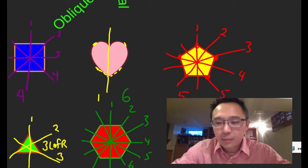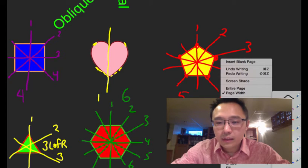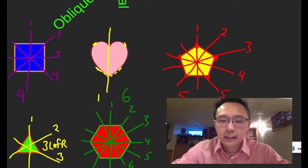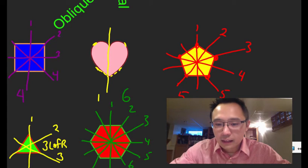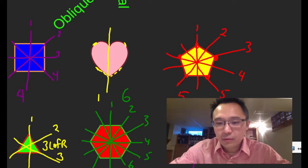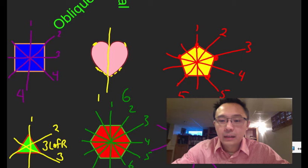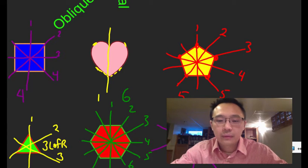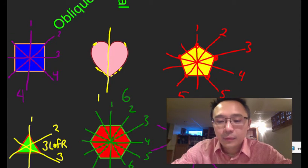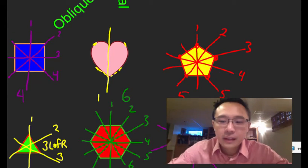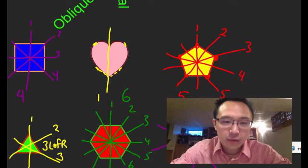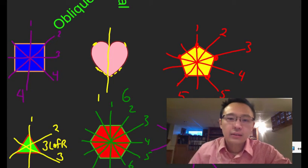Last is a star. Because it has five arms, you can draw one line of symmetry through each arm. That gives us five lines of reflection — one, two, three, four, five. So the pattern holds: the number of lines of symmetry matches the number of points or arms.